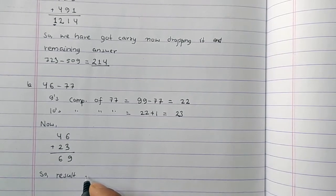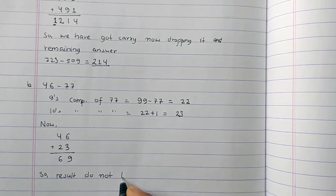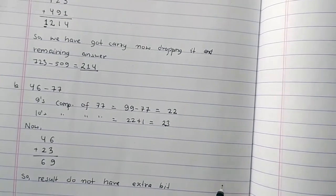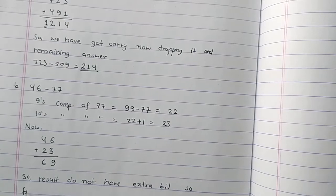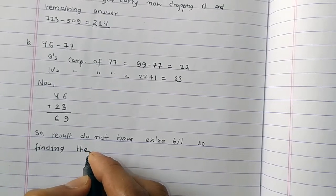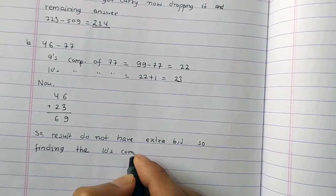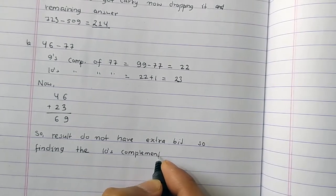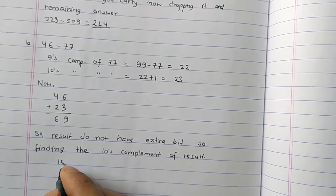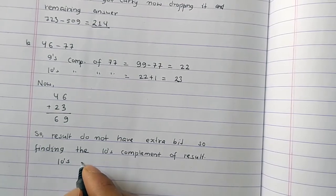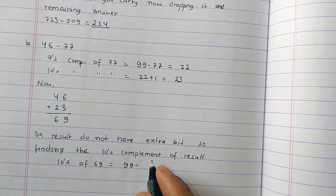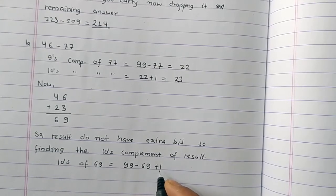The result does not have an extra bit, so we find the 10's complement of the result. The 10's complement of 69 equals 99 minus 69 plus 1.